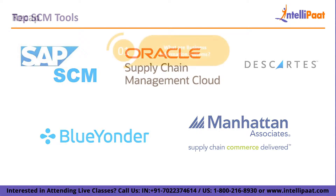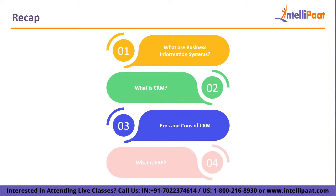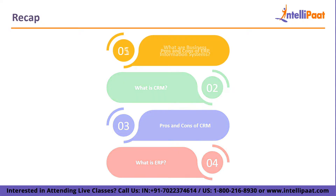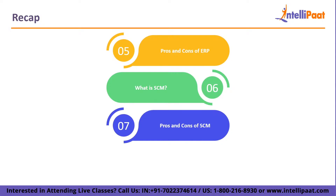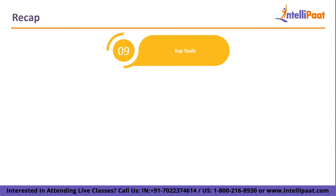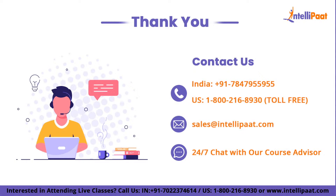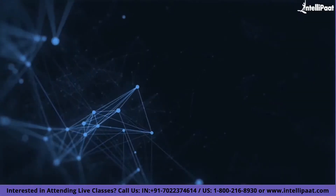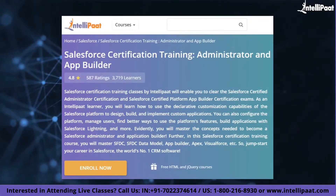To recap the session: we went through what business information systems are, then covered CRM and its pros and cons, ERP and its pros and cons, SCM and its pros and cons, the major differences between SCM, ERP, and CRM, and finally the top tools used for each. Thanks for watching — subscribe to the YouTube channel and enable the bell icon so you never miss updates from Intellipaat, which provides Salesforce online training mentored by industry experts.